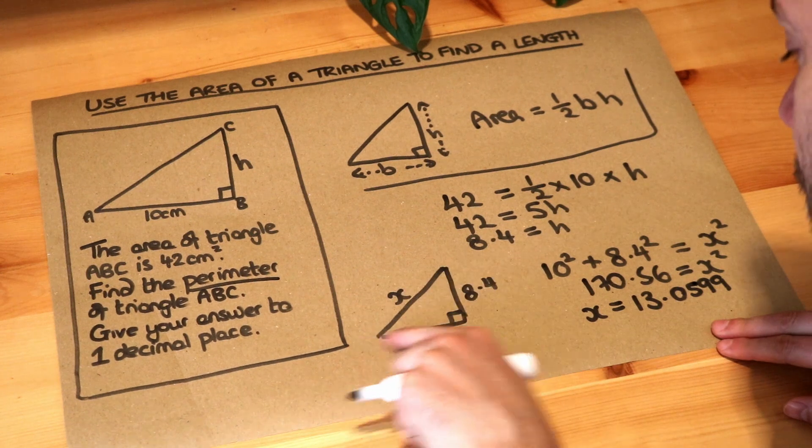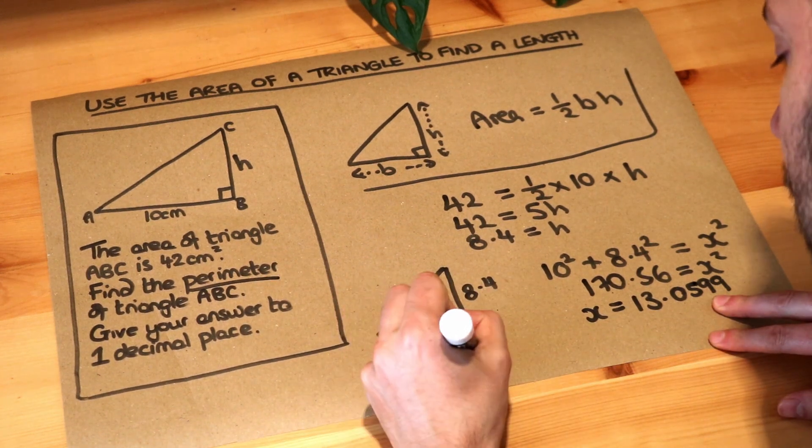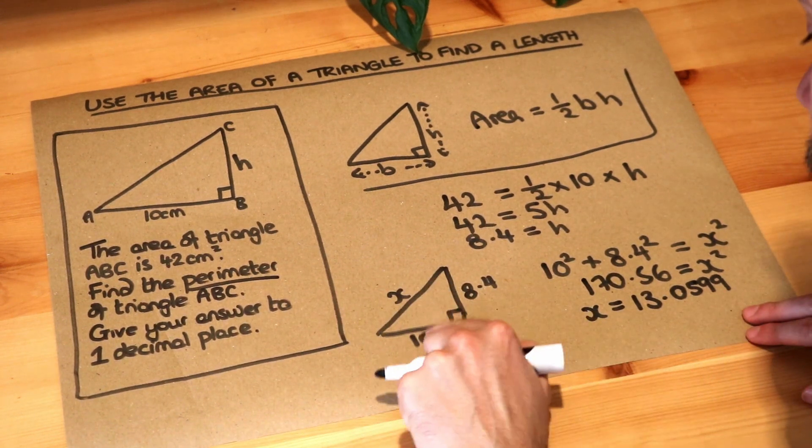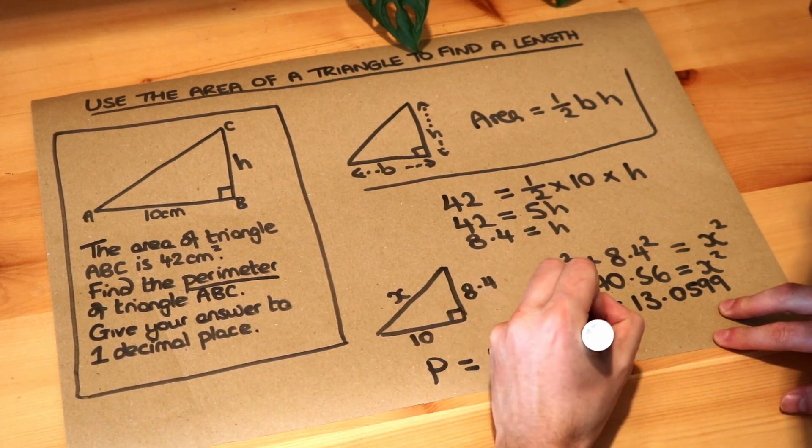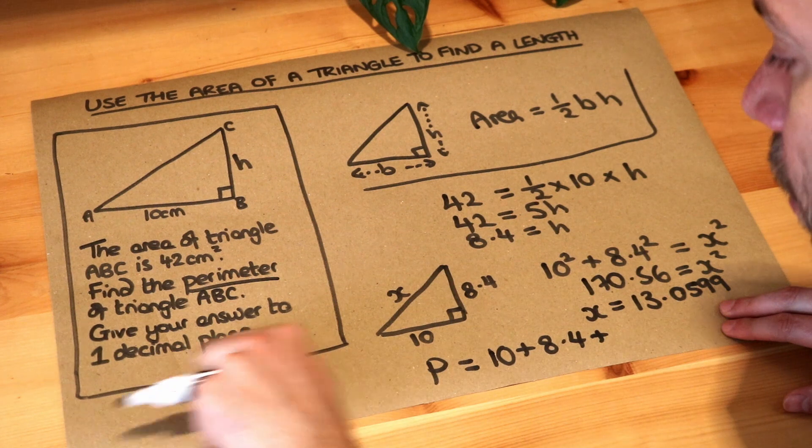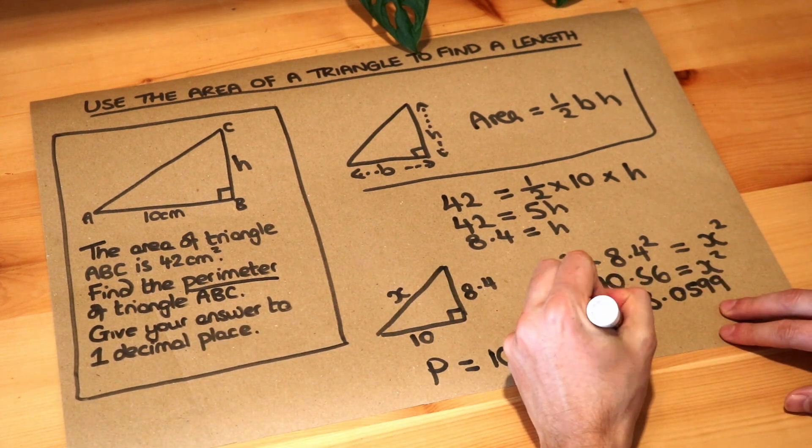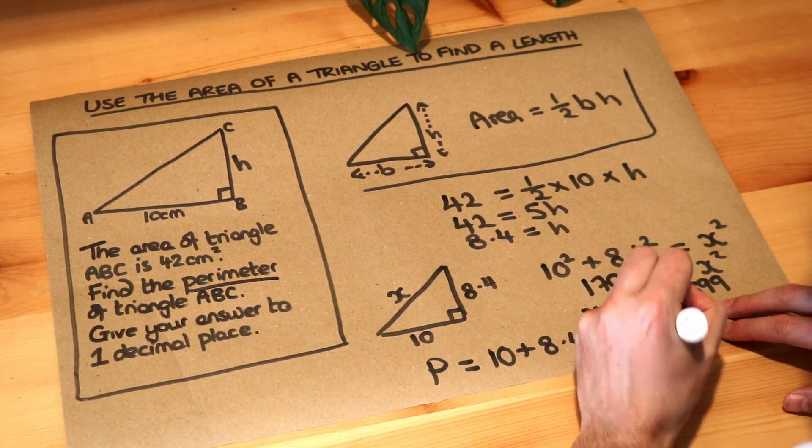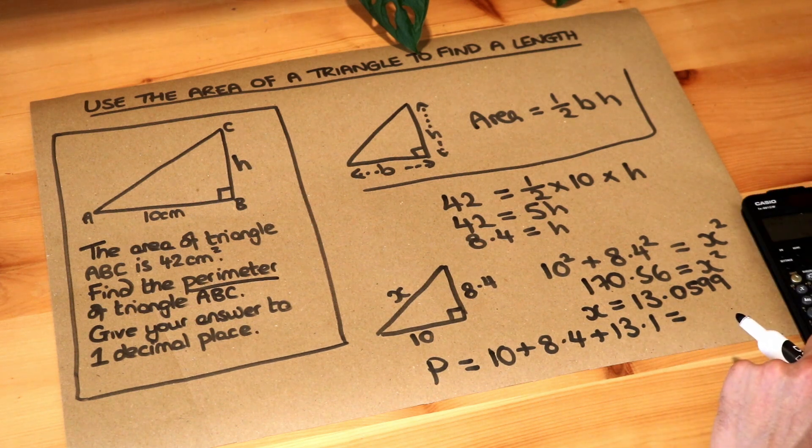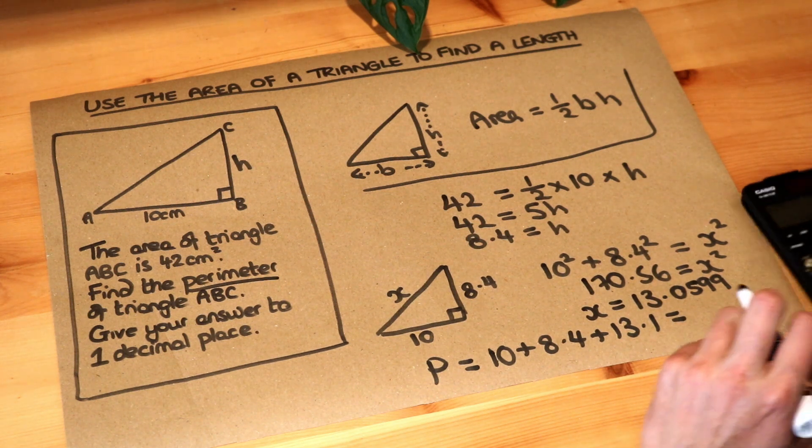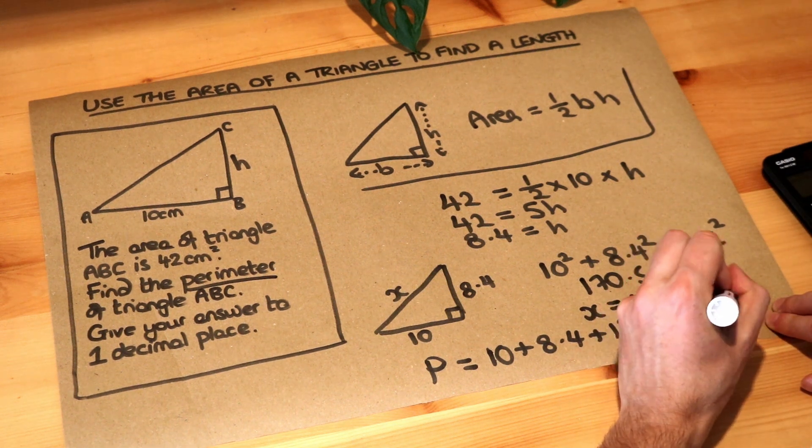So the perimeter, I'm just going to use P for short, is the sum of the three lengths. So it's the 10 plus the 8.4 plus the... Now we only need to give our answer to one decimal place, so I'm just going to use 13.1 here without any loss of accuracy that we need. So if I add those together, that gives me 31.5.